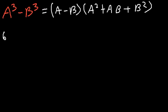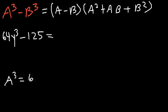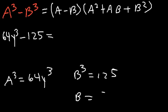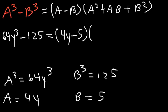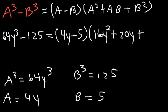Next: 64y³ - 125. Here a³ = 64y³ and b³ = 125. The cube root of 125 is 5 and cube root of 64 is 4, so a = 4y and b = 5. This gives (4y - 5)(16y² + 20y + 25).